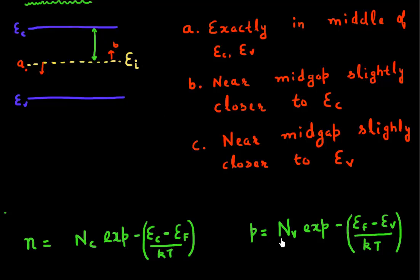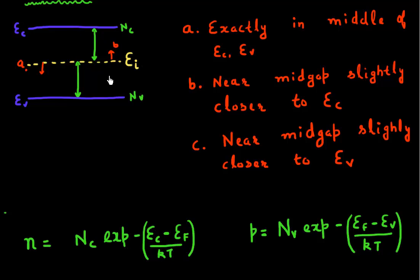Similarly, the number of holes depends upon the effective density of states in the valence band, Nv, and how far the Fermi level is separated from the valence band. So the number of electrons depends on Nc and the separation between Ei and the conduction band, and the number of holes depends on Nv and the separation between Ei and the valence band.